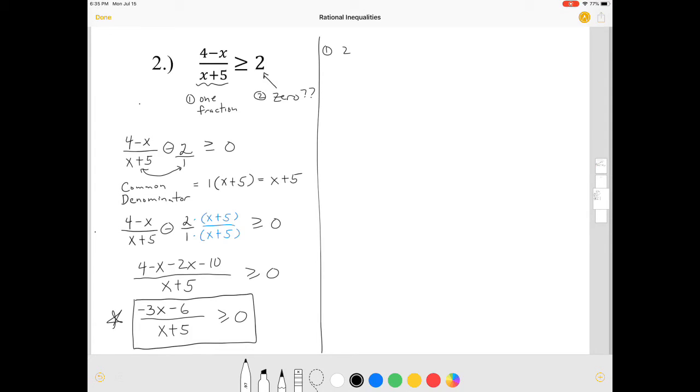So step number one, get the zeros. And remember, the zeros come from the numerator. So you take the numerator, negative 3x minus 6, set it equal to 0. So that means we get negative 3x equals 6. Dividing negative 3, we get zero. The zero is x equals negative 2.